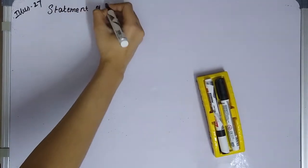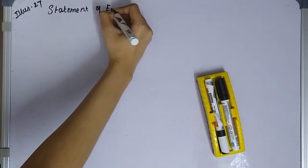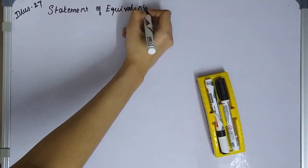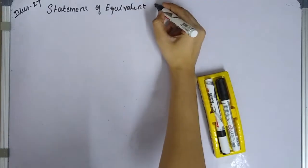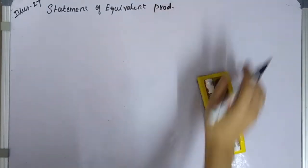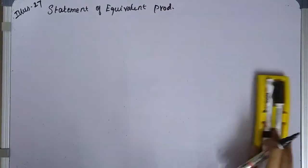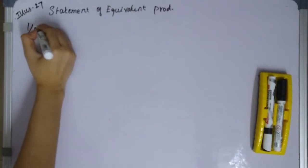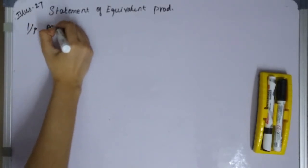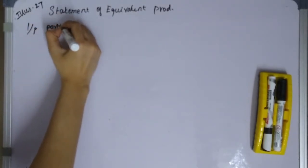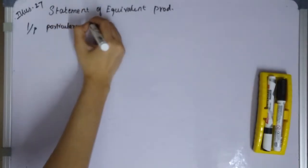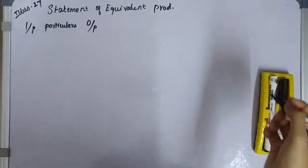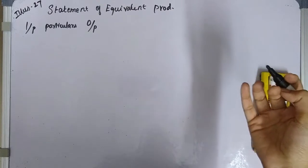Statement of Equivalent Production. We prepare the columns: Input column, Particulars column, Output column. Then we prepare sub-columns for Material, Labor, and Overhead.